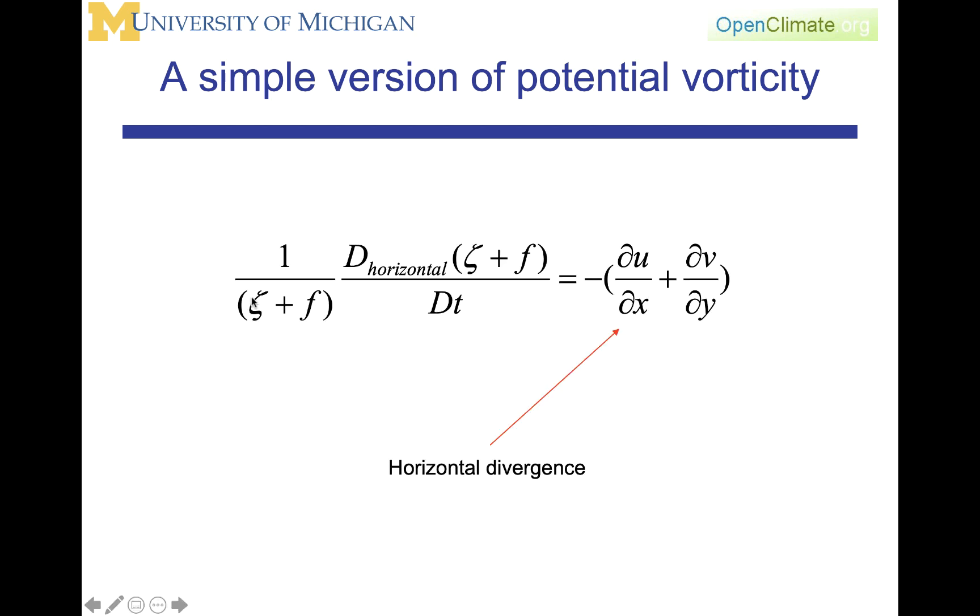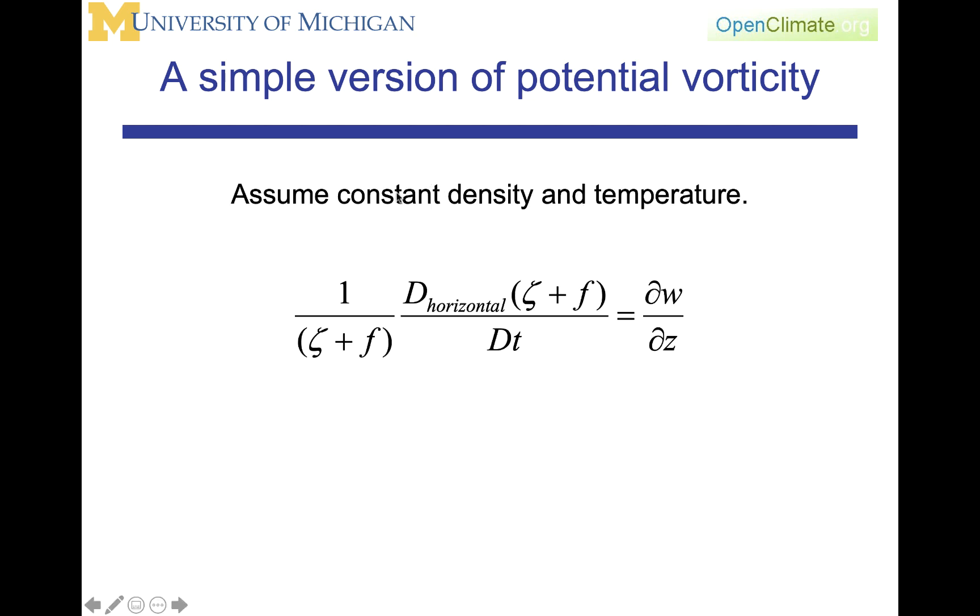We're now going to divide through by this absolute vorticity, the zeta plus f, and on this side we will leave the horizontal divergence. We're going to assume constant density and temperature. Then we're going to use mass continuity to replace the horizontal divergence with the vertical divergence, essentially, or dw/dz.